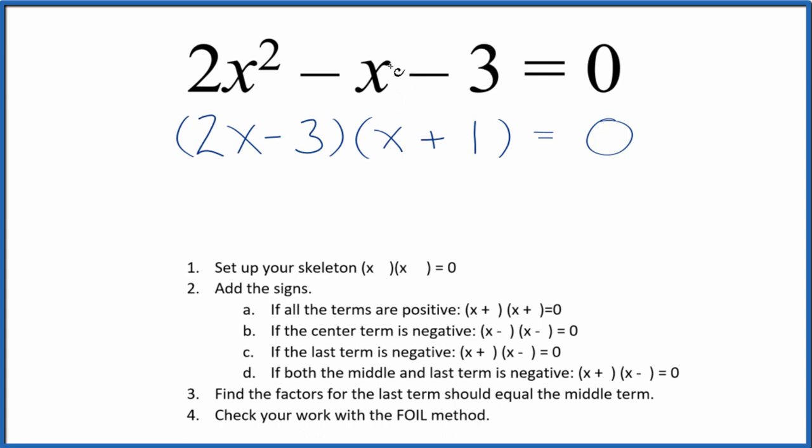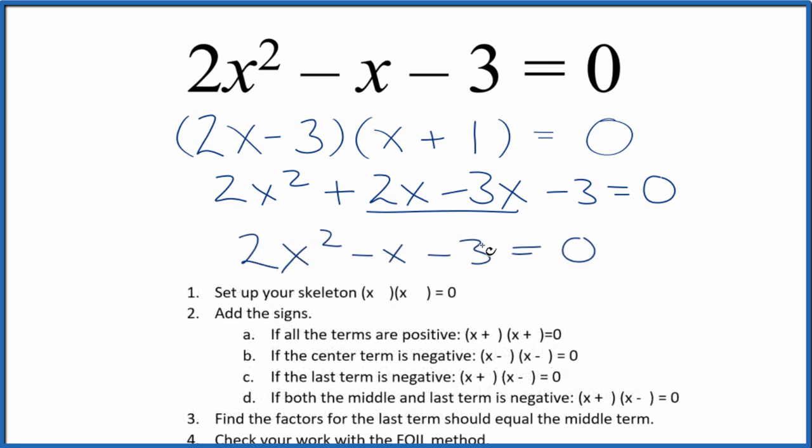Let's use the FOIL method to check that. Multiply the first, the outside, the inside, and the last, and we can combine these terms to get 2x² - x - 3 = 0. That's what we started with, so we did this part correctly.